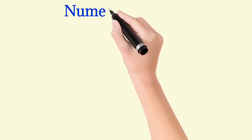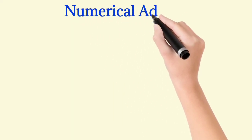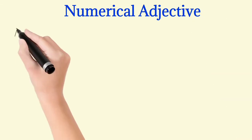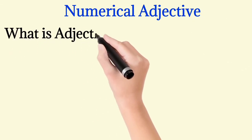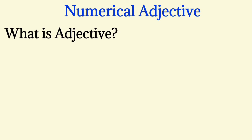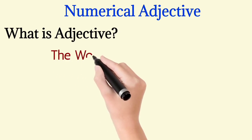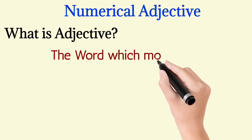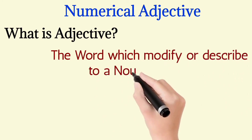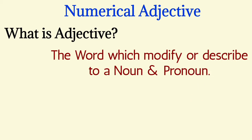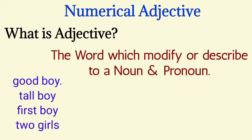Today we discuss the numerical adjective. First, let's review: an adjective is a word which describes or modifies a noun and pronoun. For example, good boy, tall boy, fast boy — good, tall, fast are called adjectives.